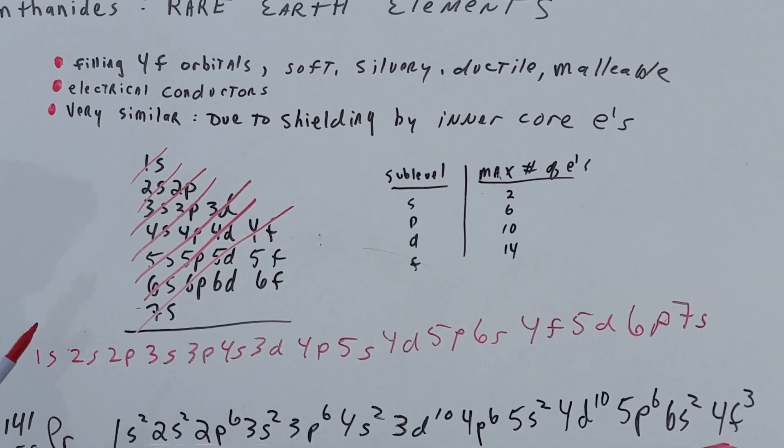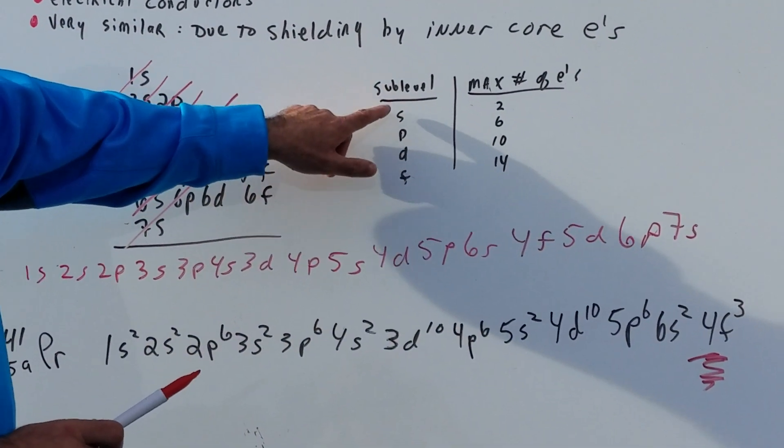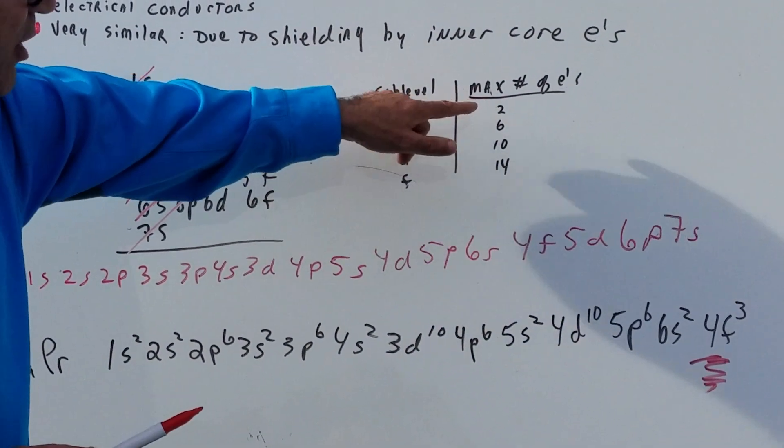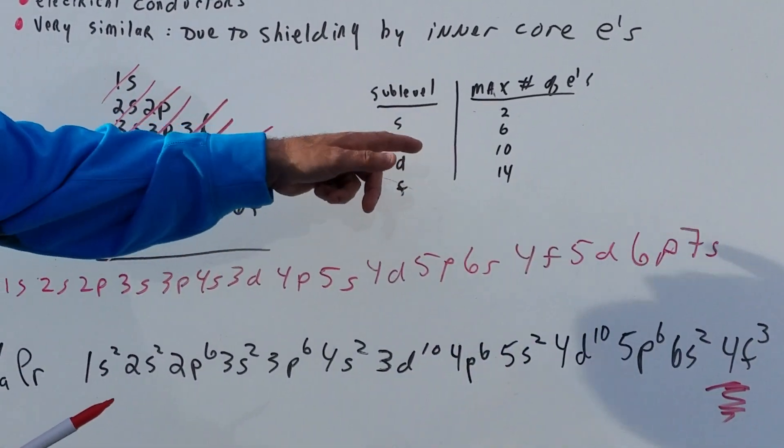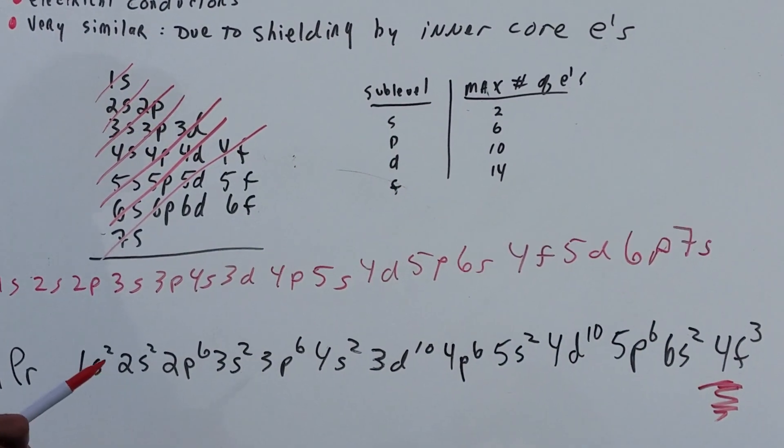Now, what I want you to know before we do this exercise is just a review. If you're in the S sublevel, we can hold two maximum electrons. P can hold 6, D can hold 10, and the F can hold 14.